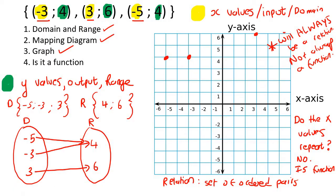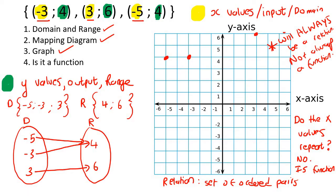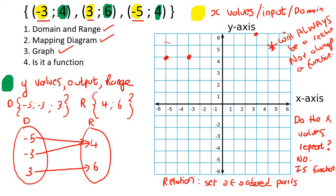Some other ways that we can check: if you look on the diagram, are any of the dots vertically on top of each other? If you ever get a situation where you've got two dots that are vertically on top of each other on the same vertical line, then you would say that is not a function. But what we had was three dots with no dots vertically on top of each other. So that is another way you can see that this is a function. Yes, it is a function.